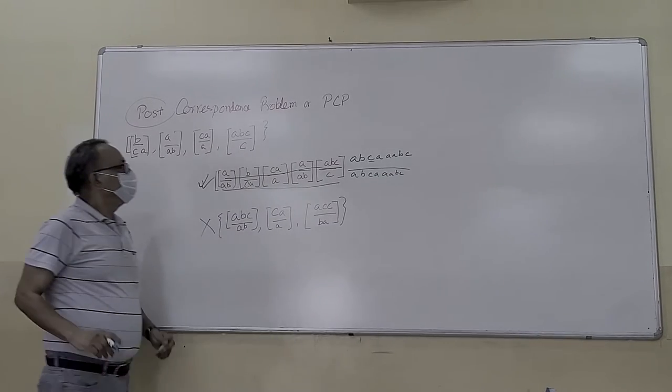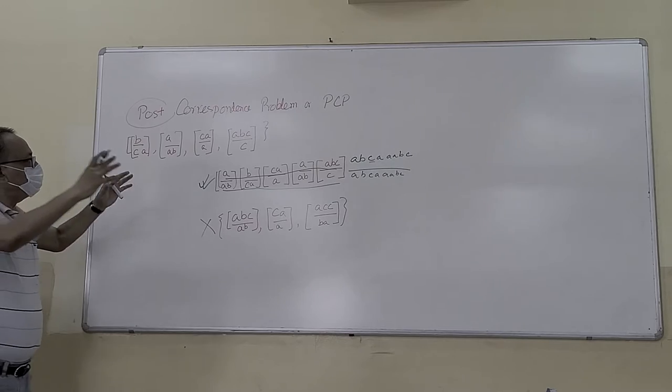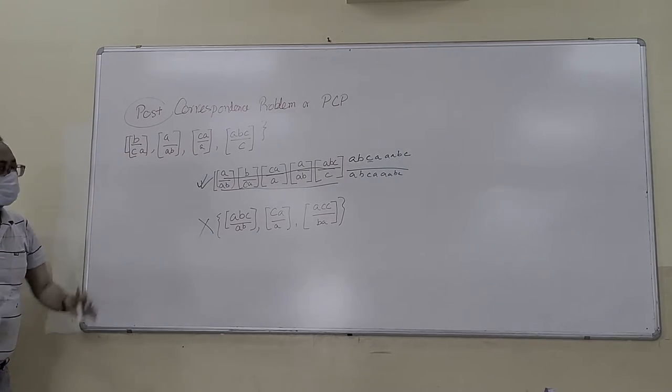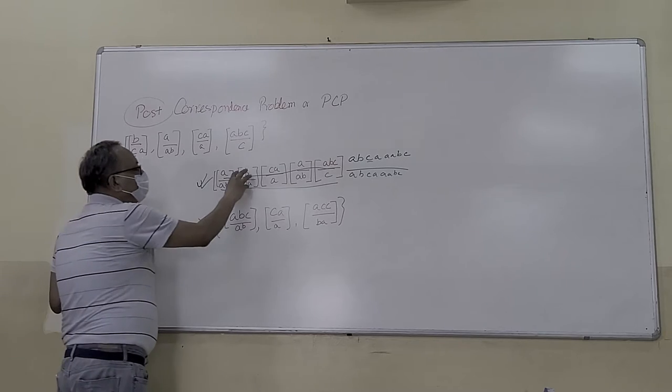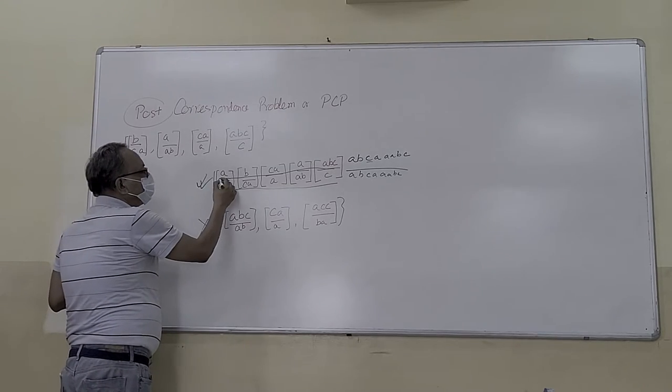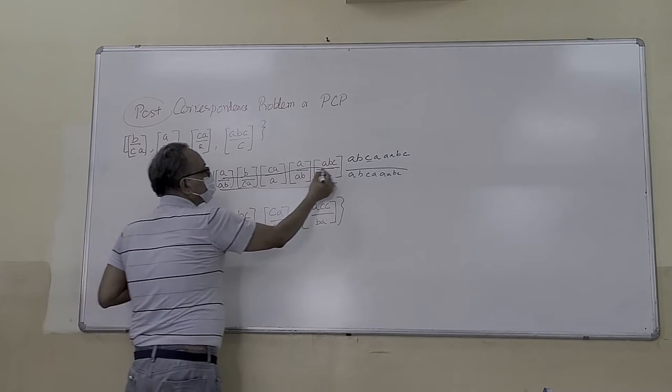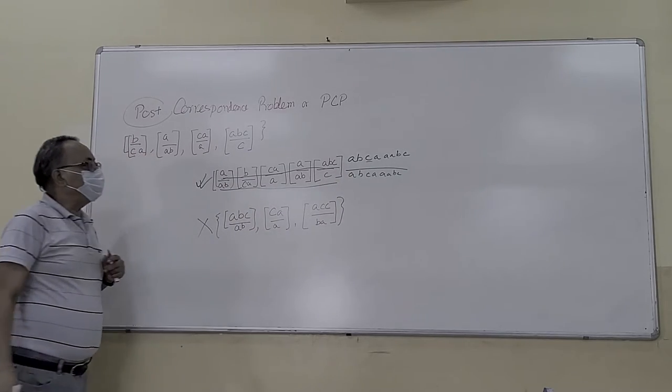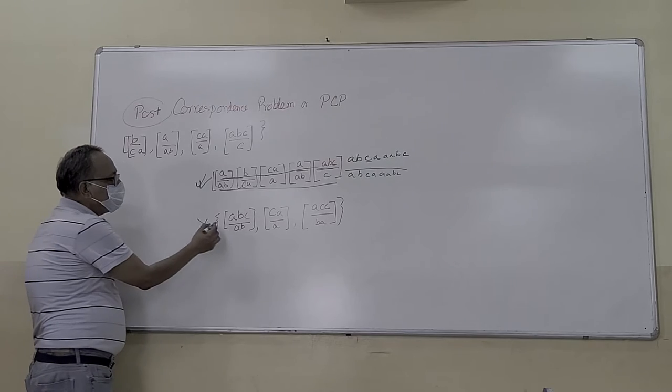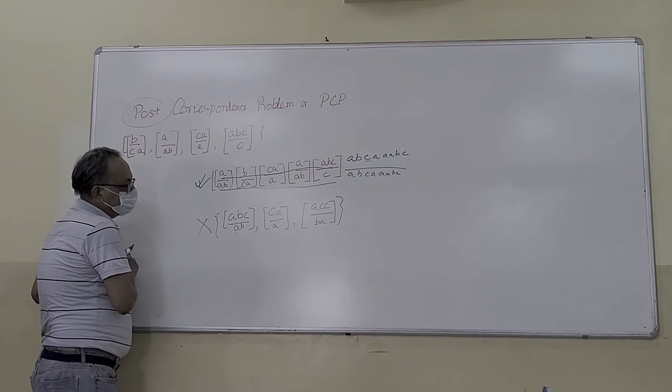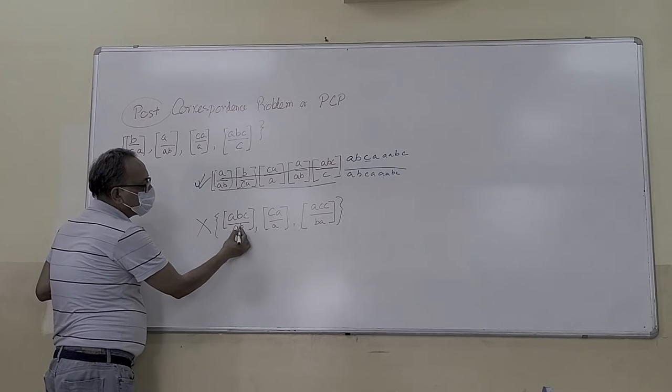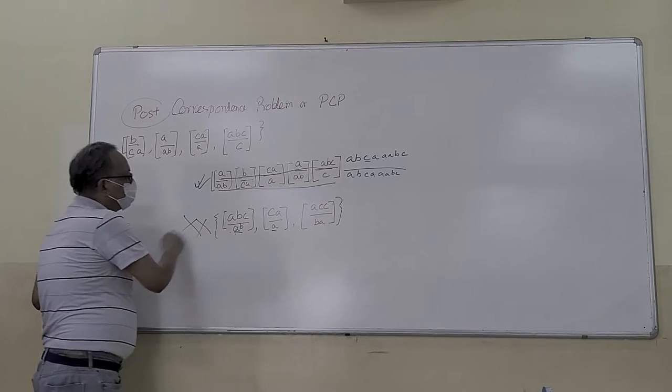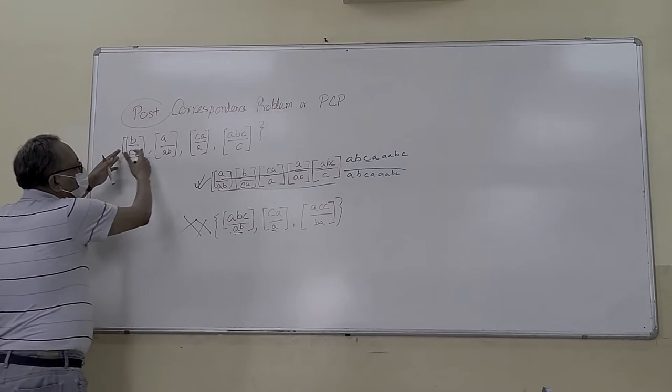So you have to arrange the dices so that the upper and lower sequences are the same. Definitely it is not possible for this kind of dices because they are always different. So this is out of the case. Consider different cases.